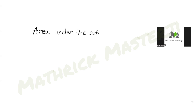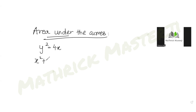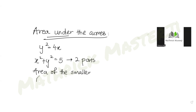Hi guys, I hope you are all doing well. Today's question is from the topic of applications of integrals, which is basically finding the area under curves. The question tells us that the parabola y² = 4x divides the area of the circle x² + y² = 5 into two parts, and we have to find the area of the smaller part.